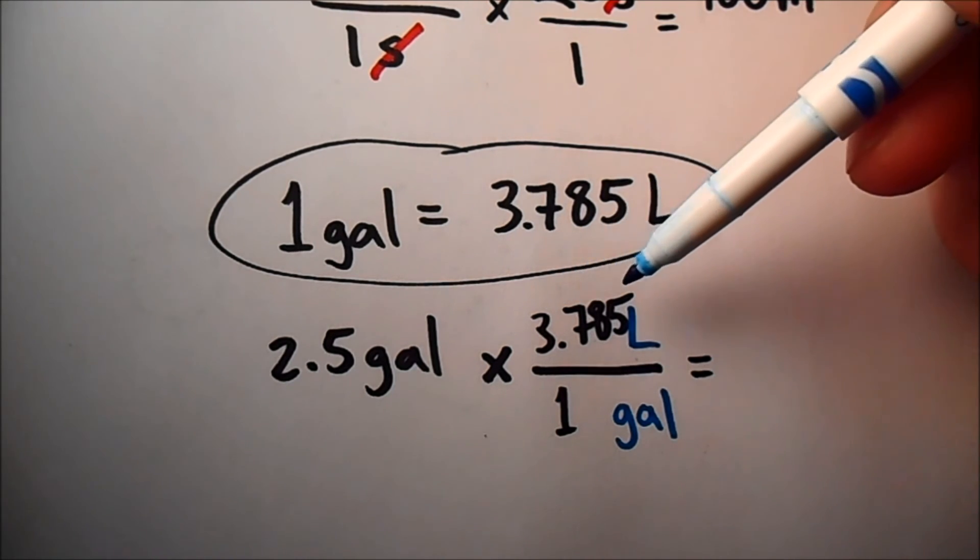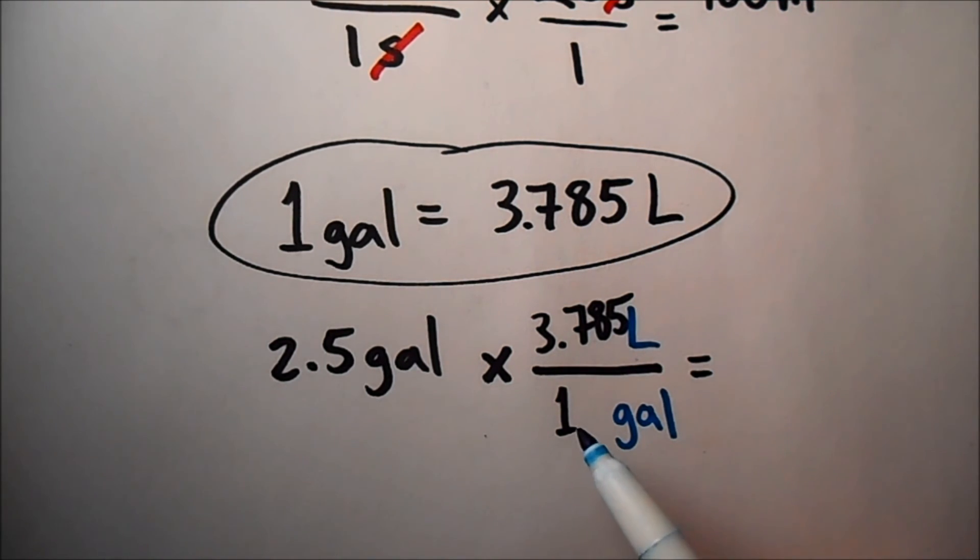Well that 3.785 then is measured and it does have significant figures. In this case, 1, 2, 3, 4 sig figs. The 1 though is infinite. So when we get to our final answer, we're going to use our multiplication division rule to have just 2 sig figs in our answer.